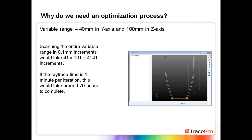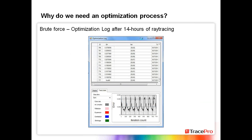I actually did use the variable scanning option in the TracePro 3D optimizer, which scans through in 0.1mm increments. Here's the optimization log: after about 14 hours of ray tracing I stopped it. We can see a changing function as it scans up and down through the variable — for example, values of 39mm in Y and then scanning up by 1mm increments in Z. So it takes a very long time to do it that way.